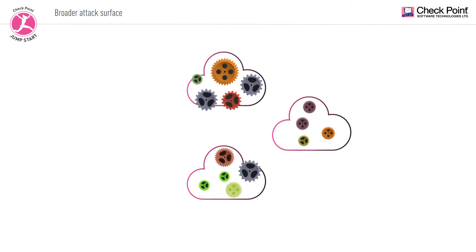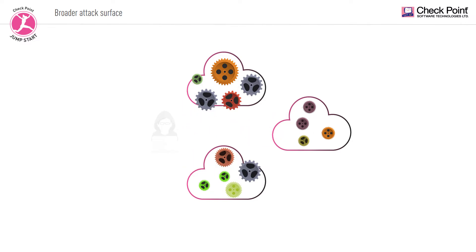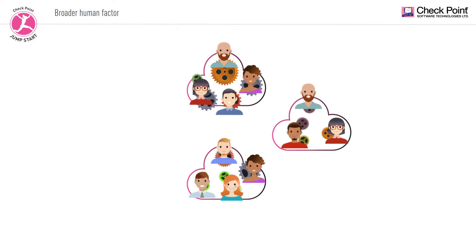The more decentralized a system is, the broader its attack surface. There are simply more components, assets, and mechanisms that may be exposed. Additionally, deploying multiple cloud accounts created by different teams for different applications means there are simply many more targets of attack that might be compromised due to the human factor. All it takes sometimes is one misconfiguration of a resource or an account, and the road is paved for exploitation.